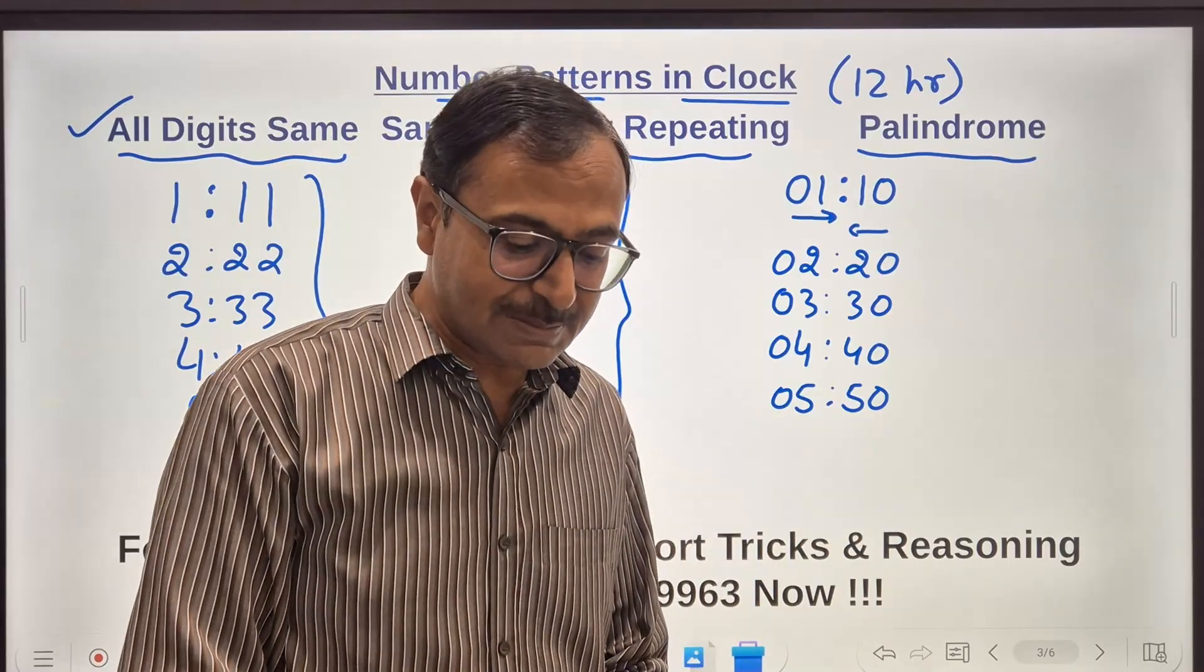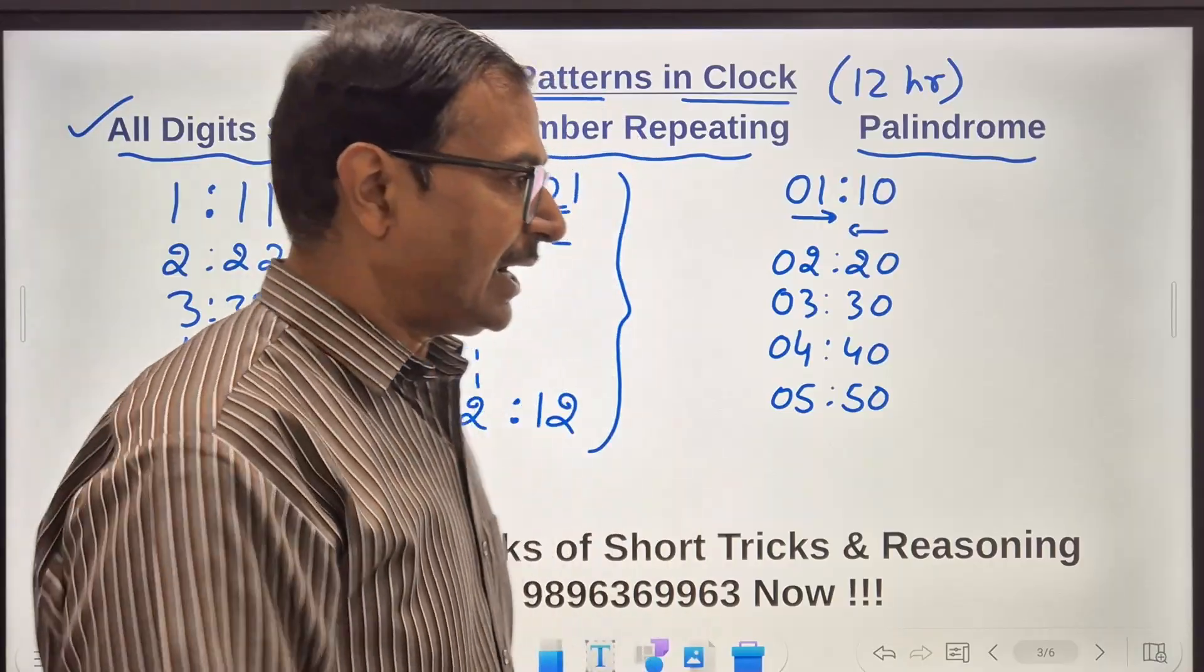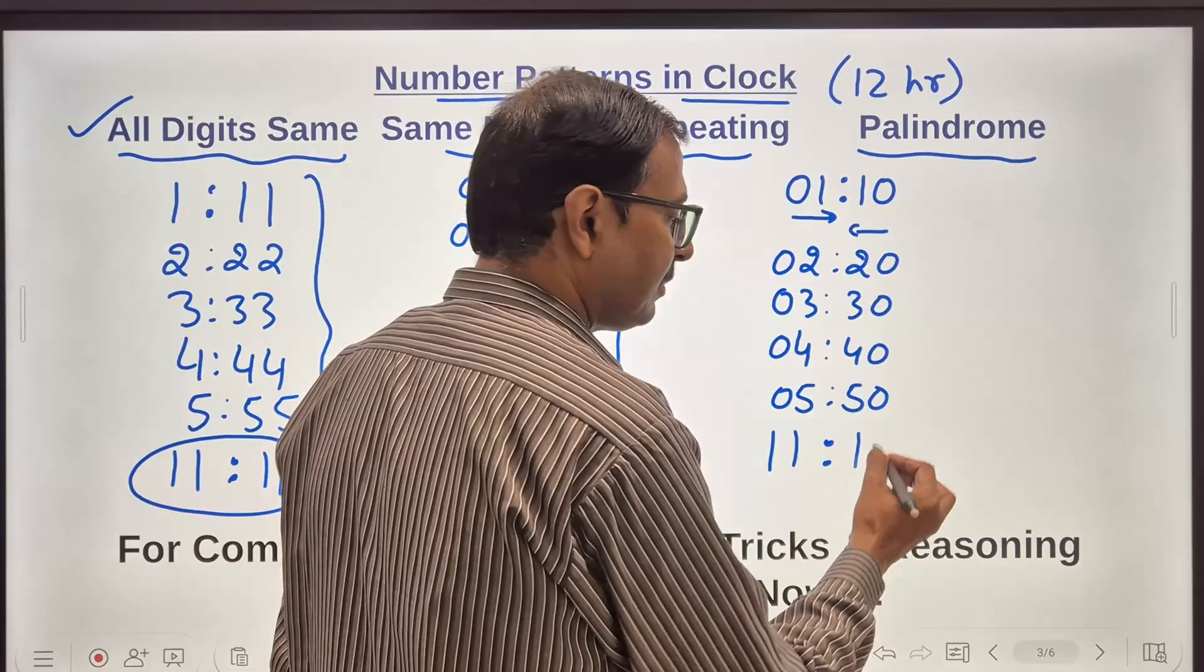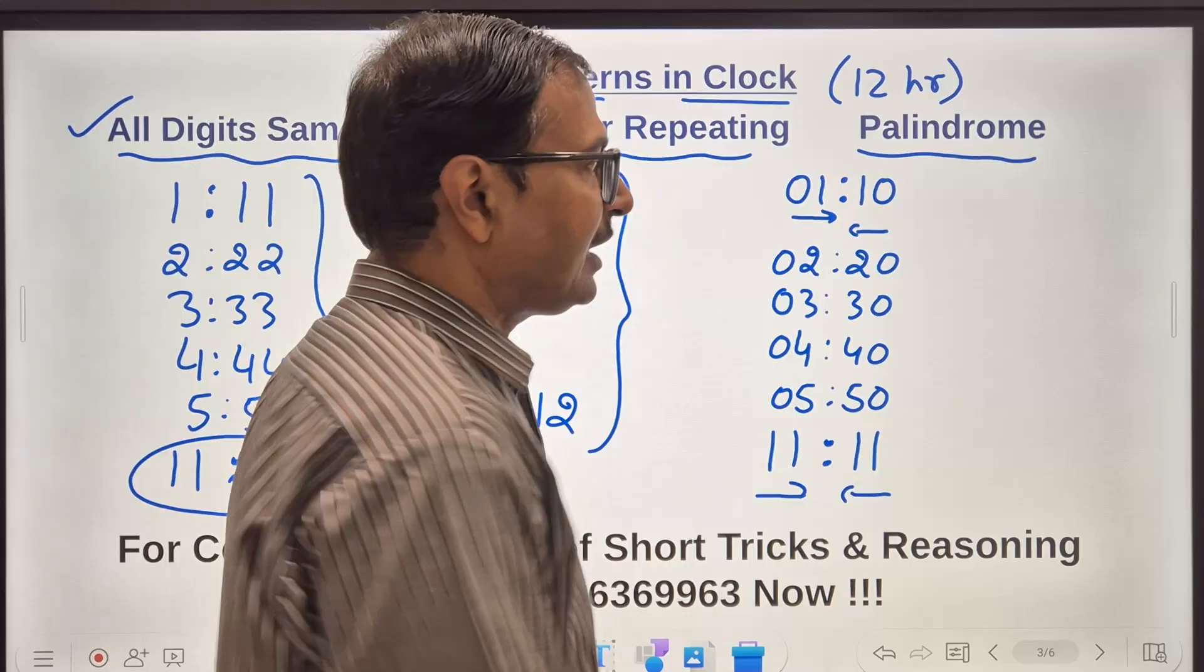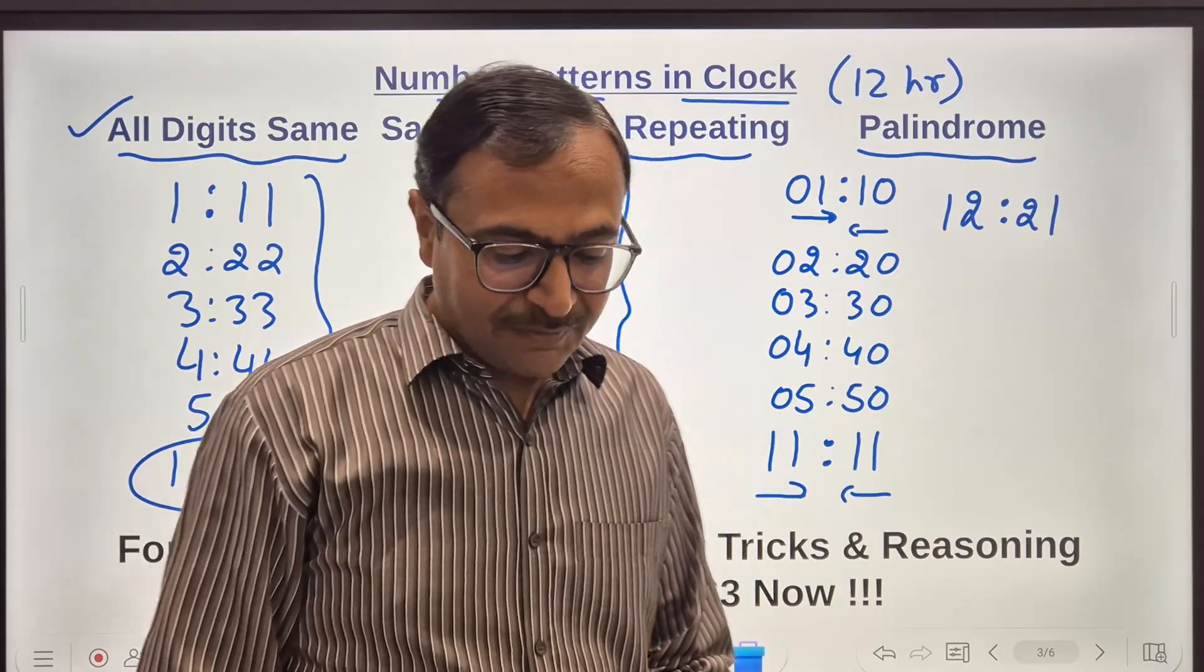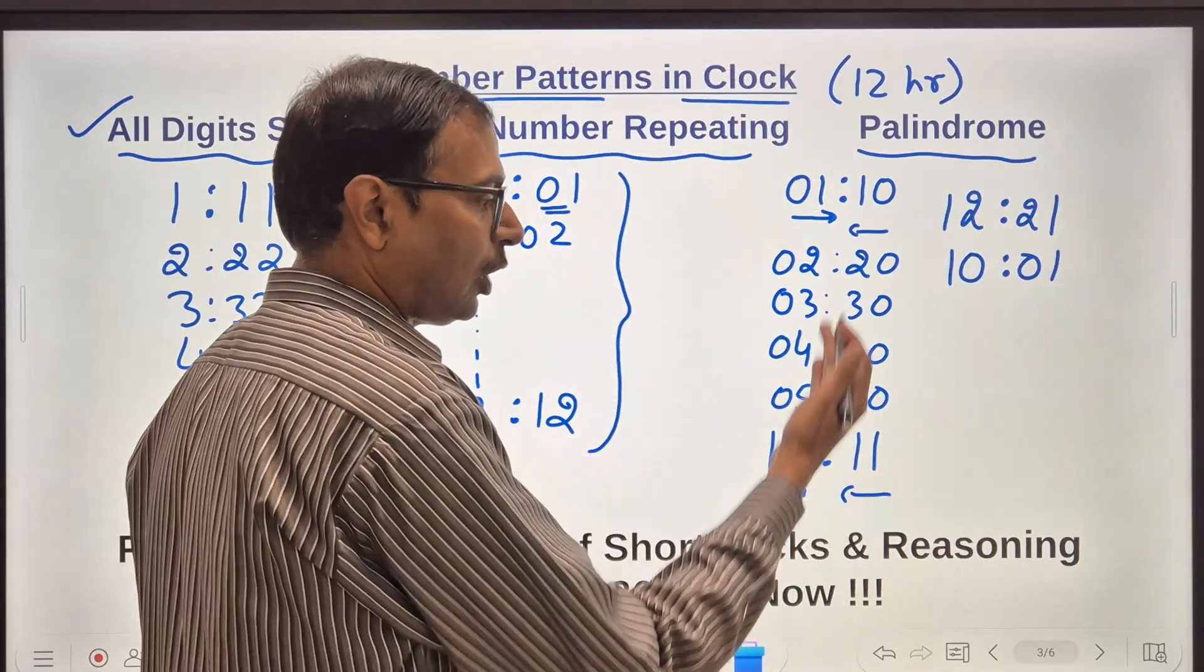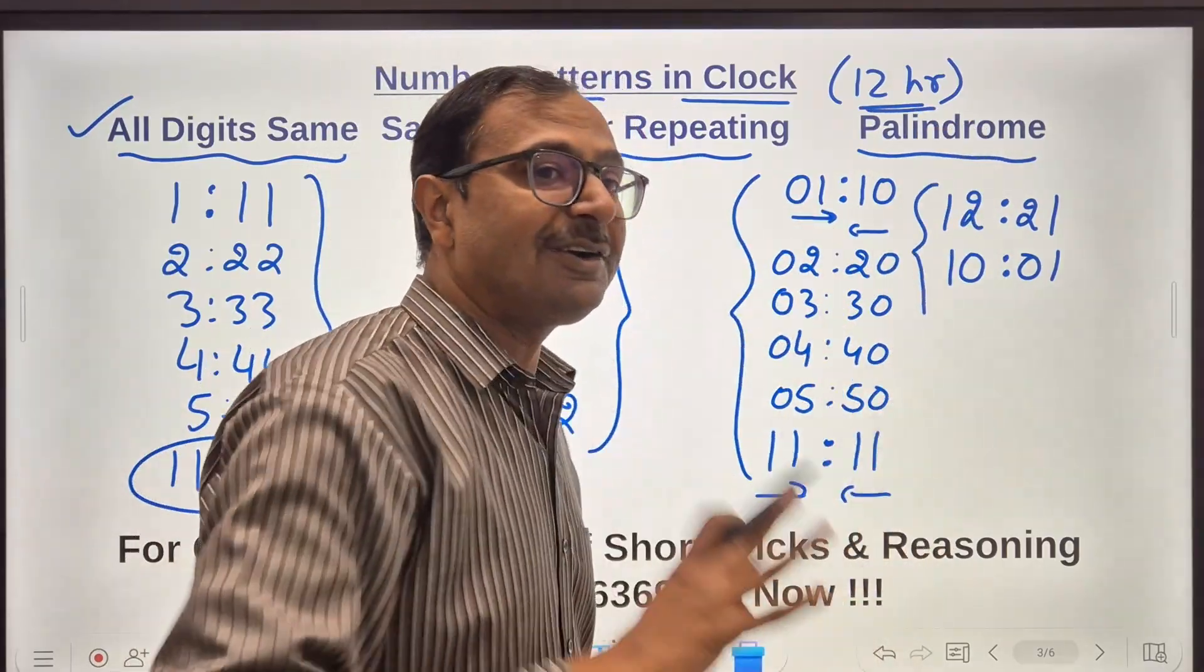And after that what palindrome we are going to obtain is 11:11 because that also reads the same from the left to right and from the right to left. And similarly we have another time 12:21 that is also a valid palindromic time. And finally we have 1 minute past 10 that is 10:01 which forms a palindrome. So how many times this happens in a 12 hour period? It happens exactly 8 times.